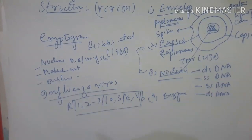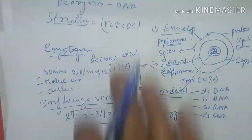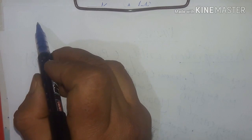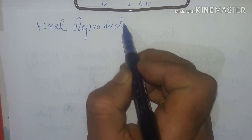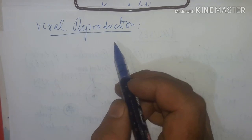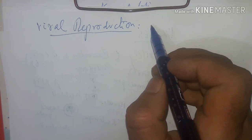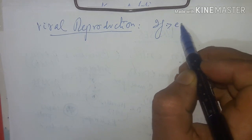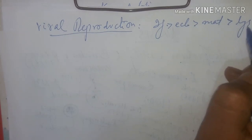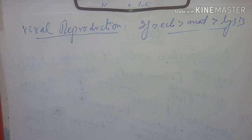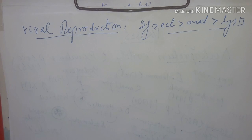Viral reproduction is divisible into different phases: infectious phase, eclipse phase, maturation phase, and lysis. There are three main reproductive cycles: lytic, lysogenic, and pinocytic reproduction.